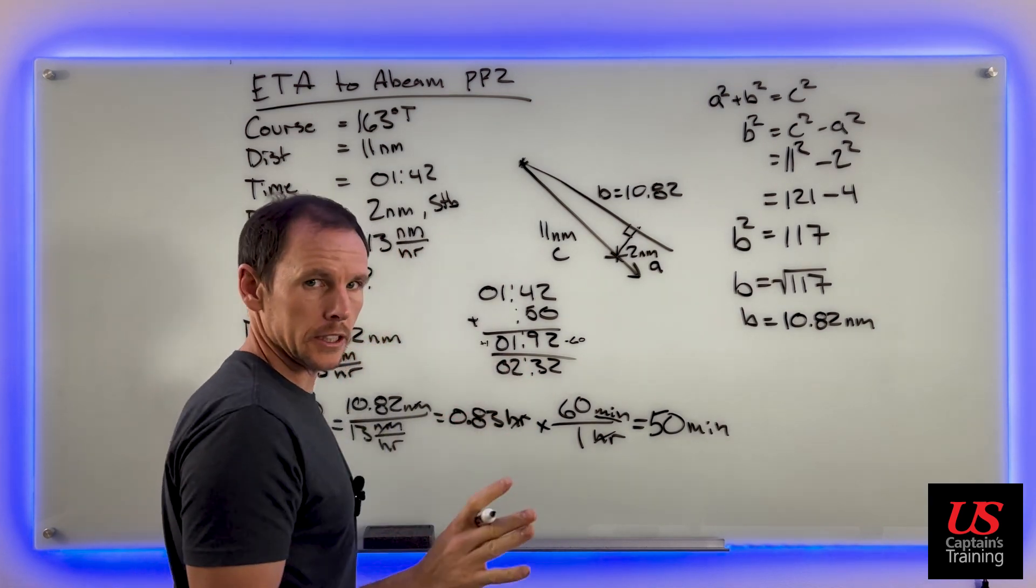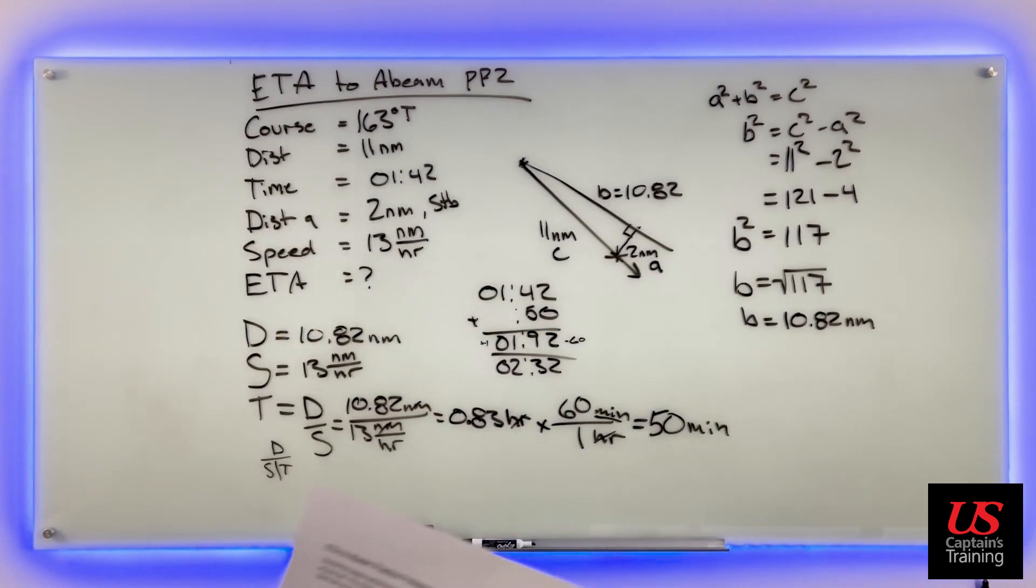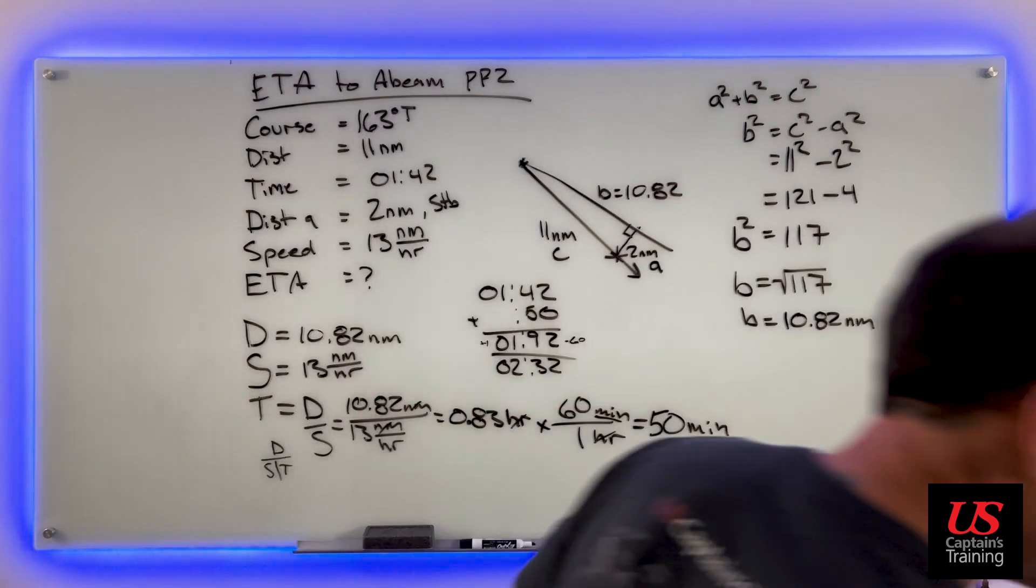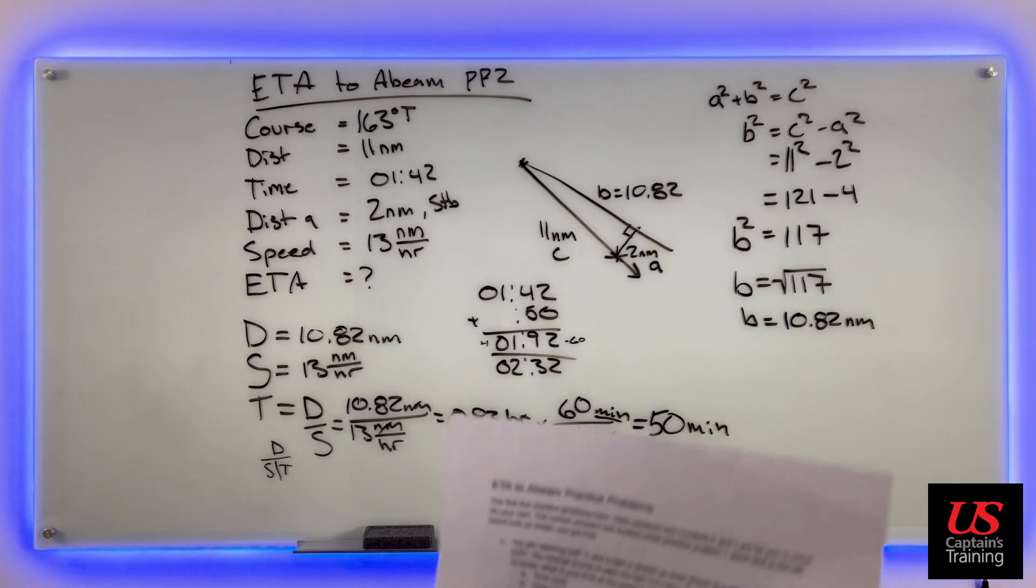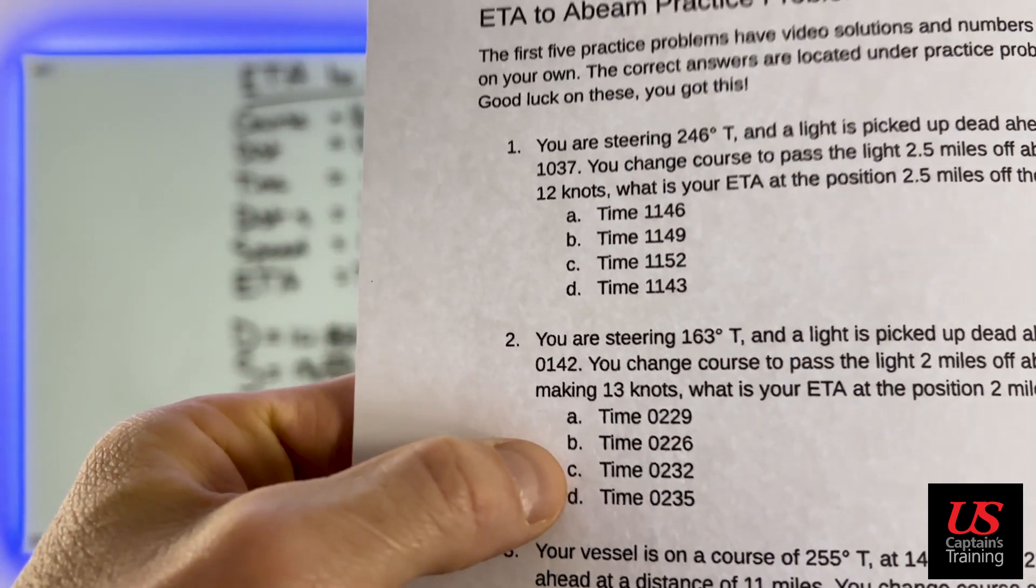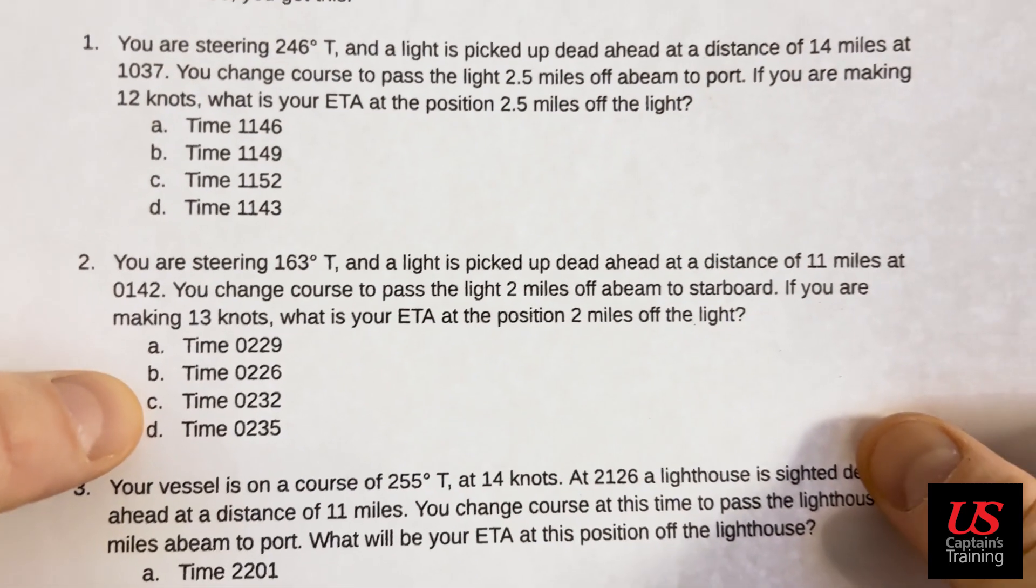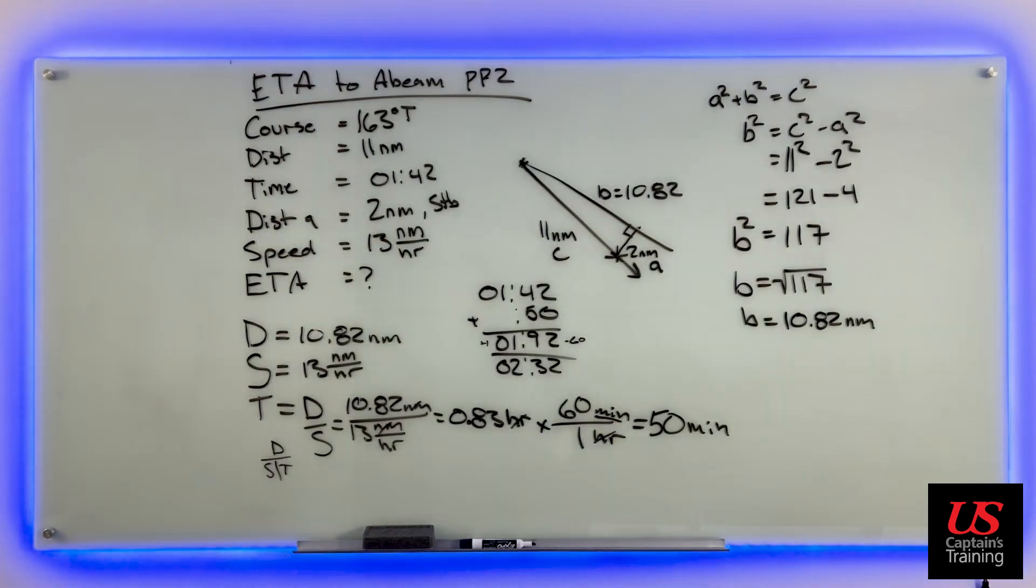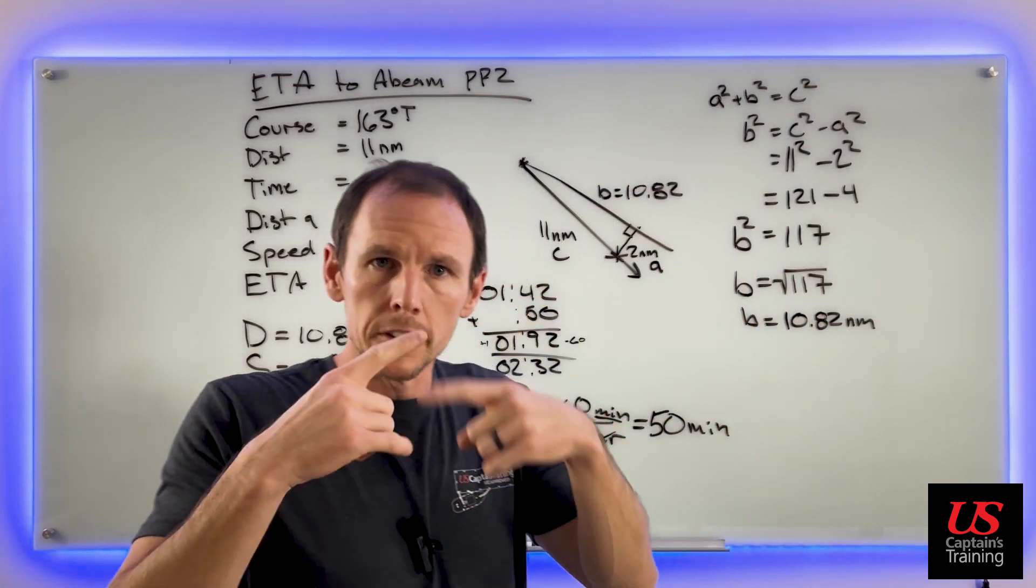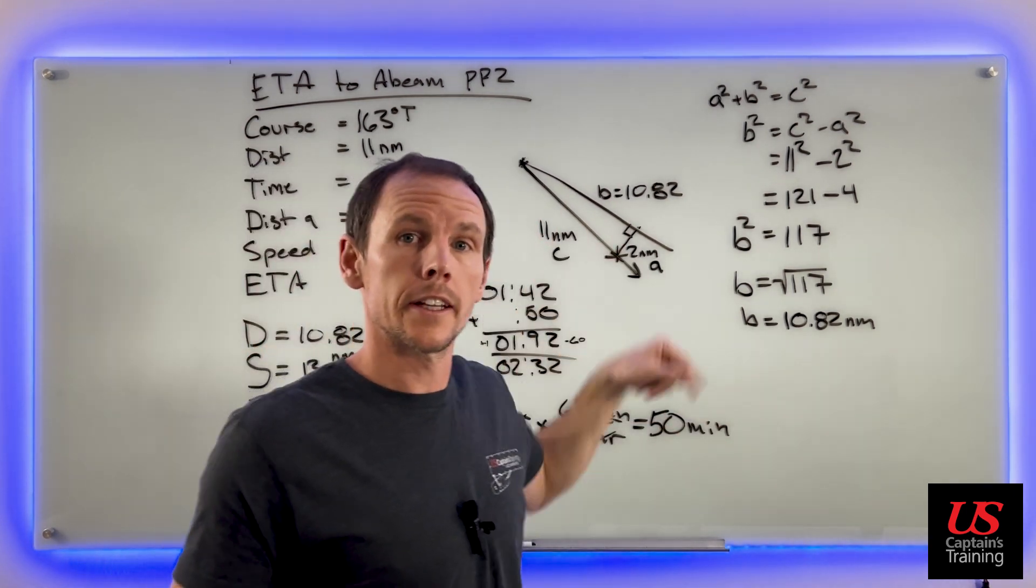Now let's check our answer. I see 0232 is c. Yeah, we are correct - 0232 is c right there. Awesome. Give yourself time, just keep going through these. We're going to solve five of them and on to the next one.